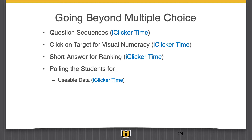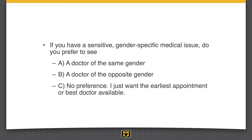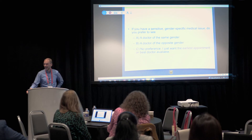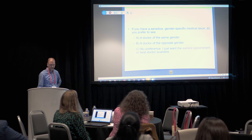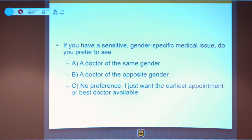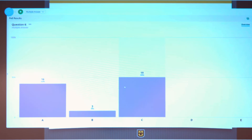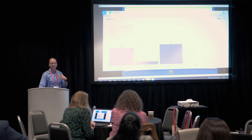In addition to polling for data purposes, sometimes I use it to illustrate a concept. Here's a freebie question: if you have a sensitive, gender-specific medical issue, which doctor would you prefer to see? I always tell students to go with their gut — be honest, it's all anonymous. For these types of questions I count everything as correct. Then we reveal the answer — it's pretty close to what I see with my students. A decent chunk say 'first appointment, best doctor,' but a reasonable chunk say 'same gender.' Then you can discuss consumer-based discrimination and information, and lead into discussions of how consumer preferences can have outcomes in the market.